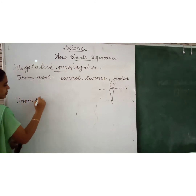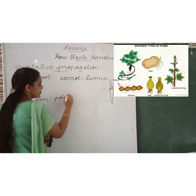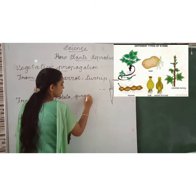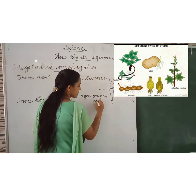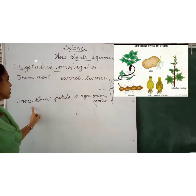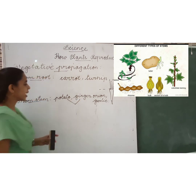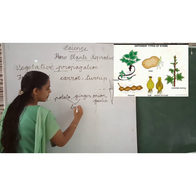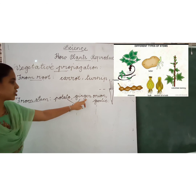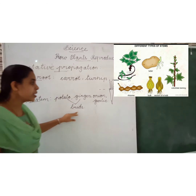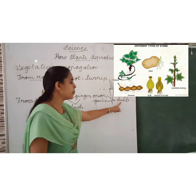Next is from stem. What are the plants that grow from the stem? Potato, ginger, onion, garlic. These plants' stems will grow into a new plant. From potato and ginger, they have buds, and from these buds new plants will grow. Onion and garlic have a bulb, and from the bulb new plants will grow.